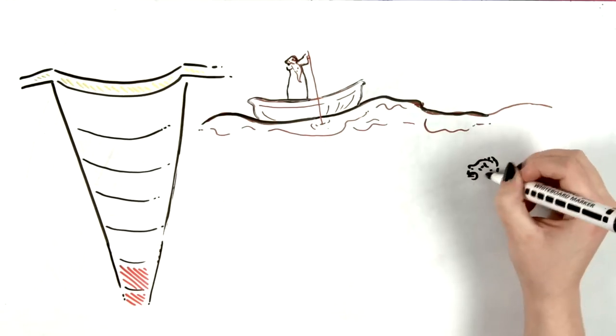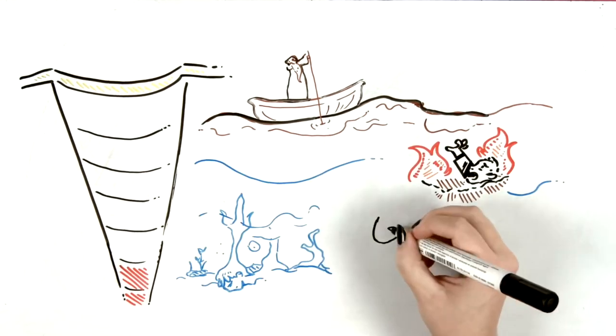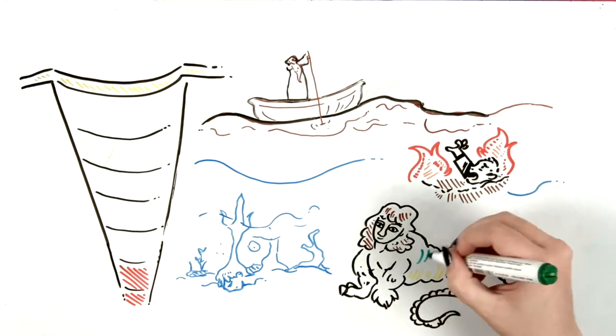In the sixth level the Epicureans suffer in graves with flames. Level seven is occupied by the violent ones who are sunk in the river, and their bodies have been turned into trees so that harpies can bite them.